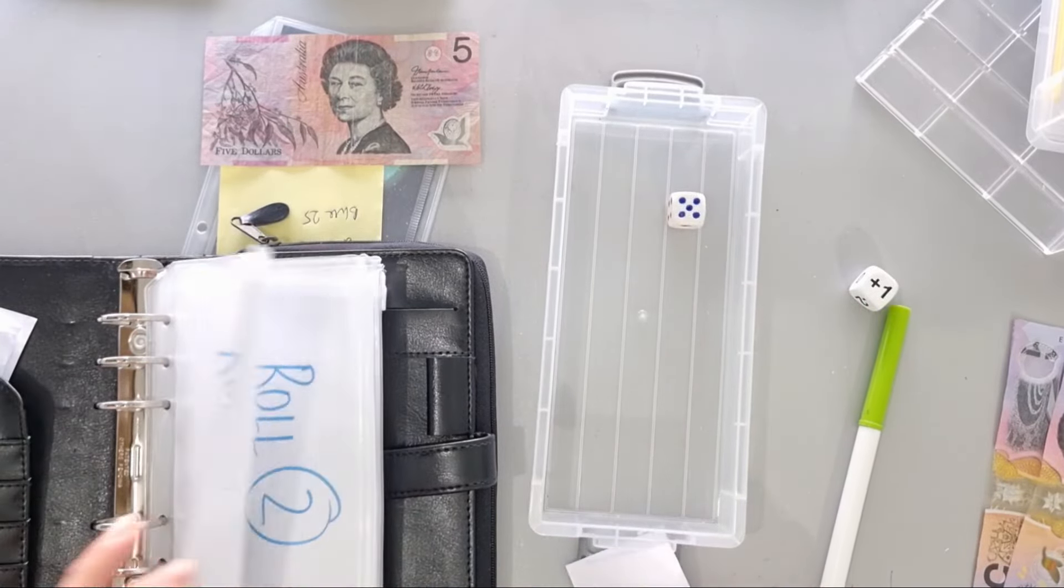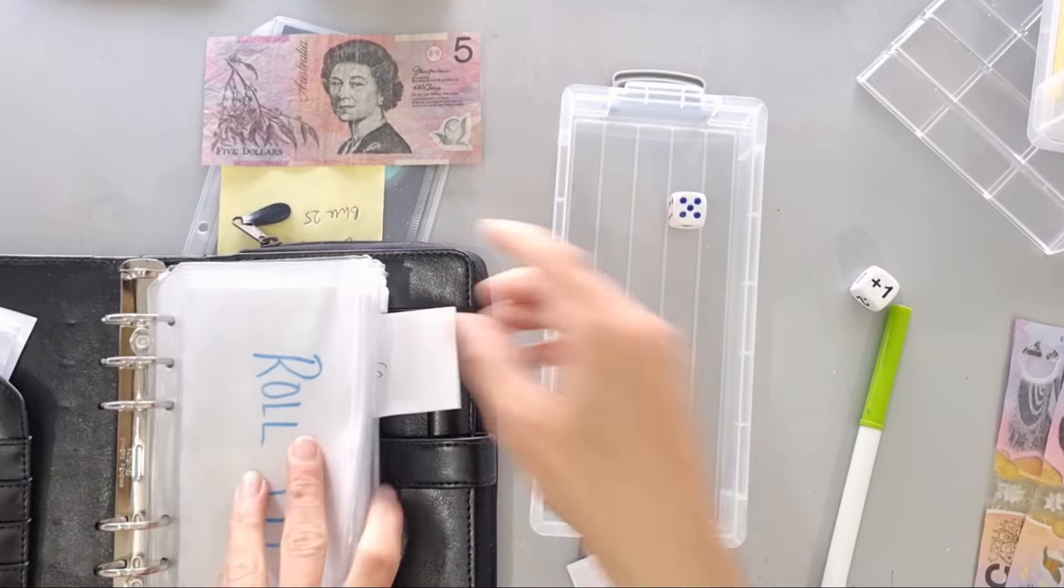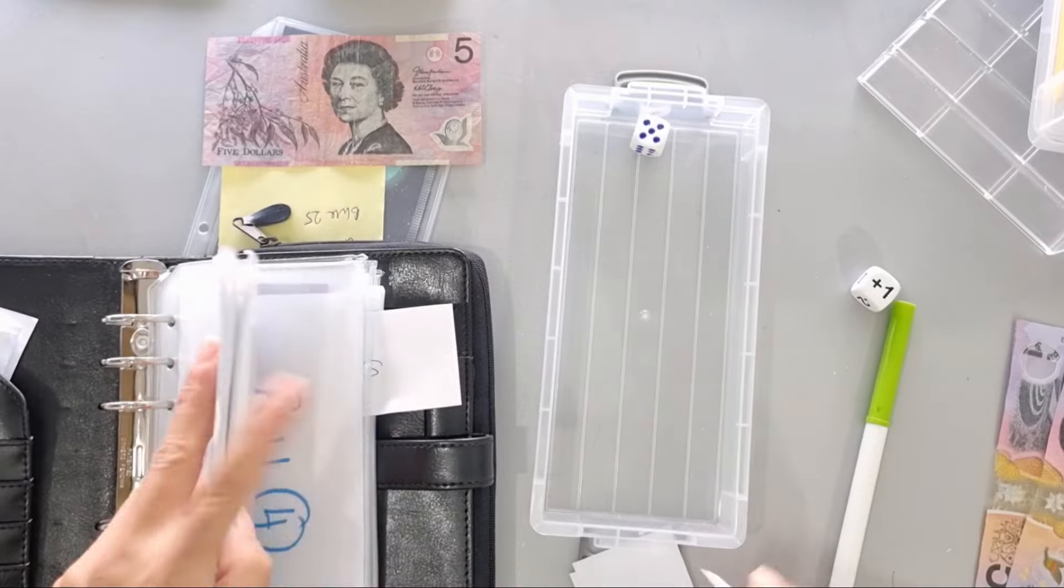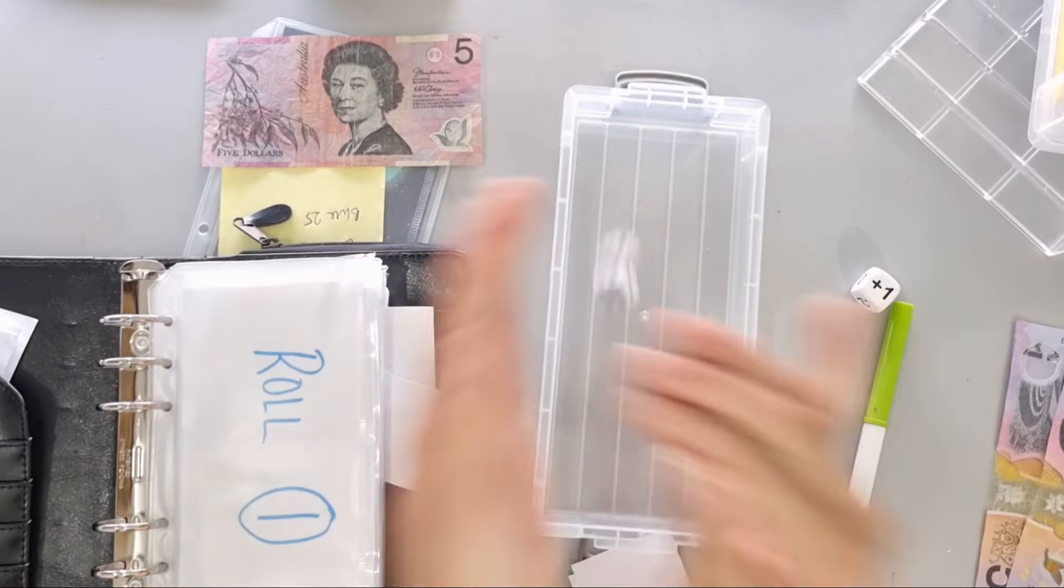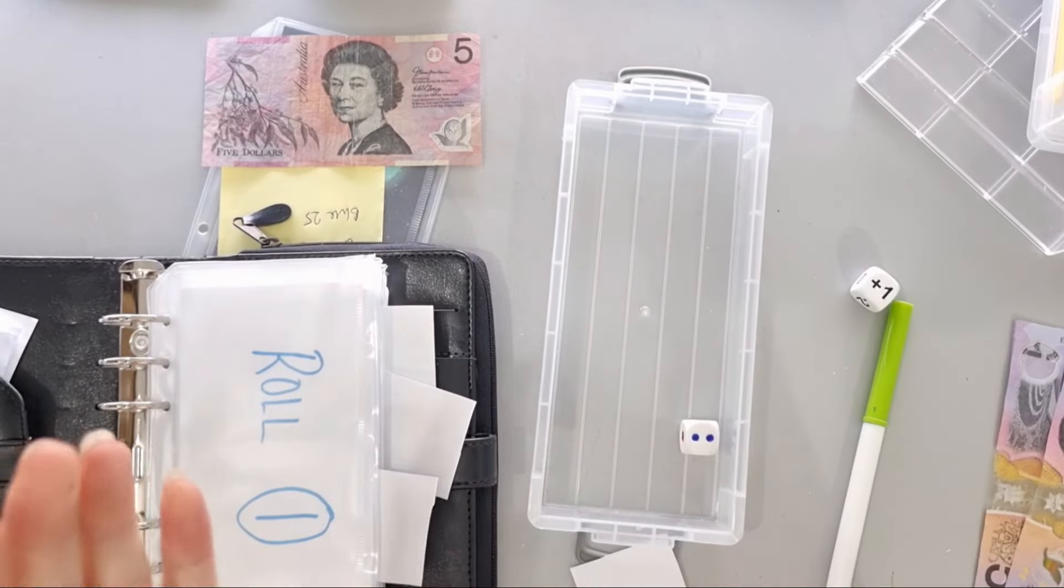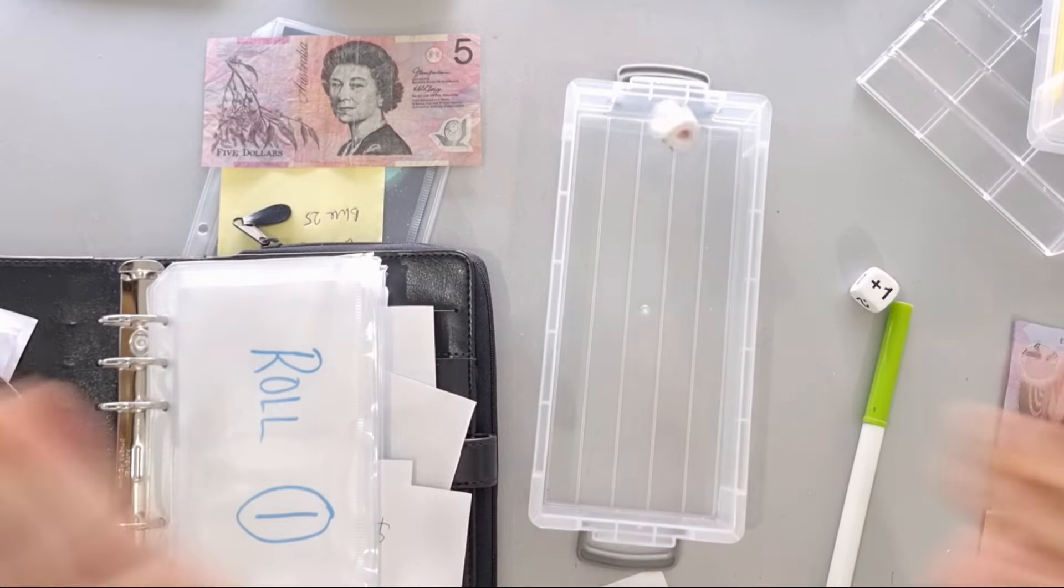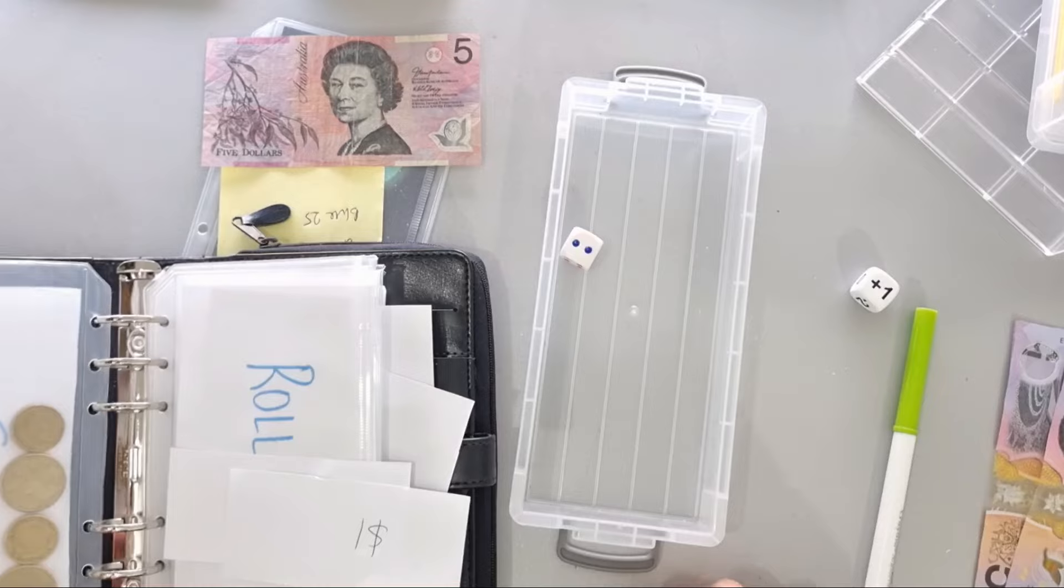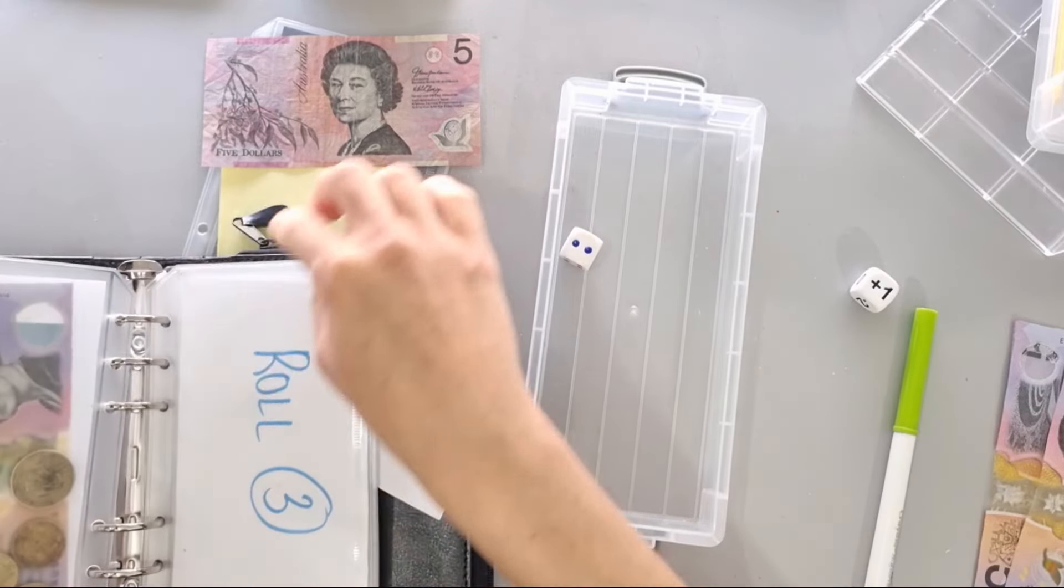It's number five. Next, another five. My rolling technique is just horrible. Two. Another two.